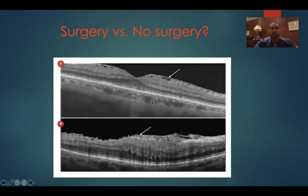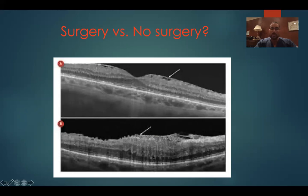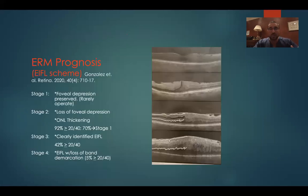Here are a couple examples of surgery versus no surgery. Image A on the top is probably a patient we're not going to operate on. You can see the epiretinal membrane, but the foveal contour is preserved, there's not really increased thickness, and the retinal architecture is maintained. Whereas image B on the bottom shows a thick epiretinal membrane, sub-ILM cystoid spaces, irregularities of the inner macular contour, and disruption of the retinal architecture. When you look at that intuitively, you know that's a bad membrane that probably needs surgery. But what are we really looking at objectively?